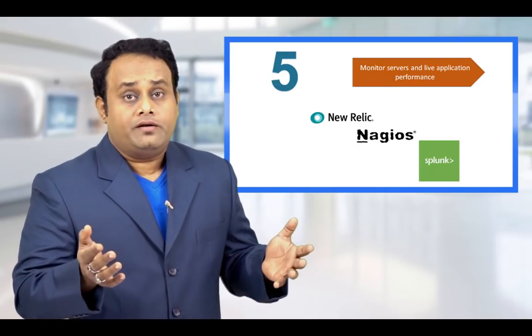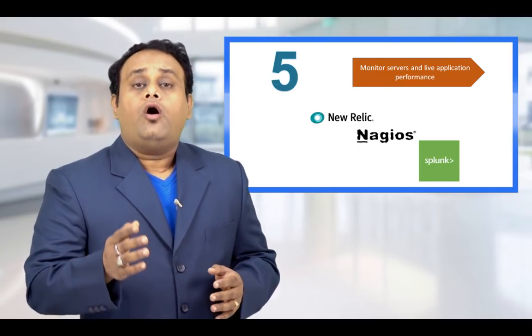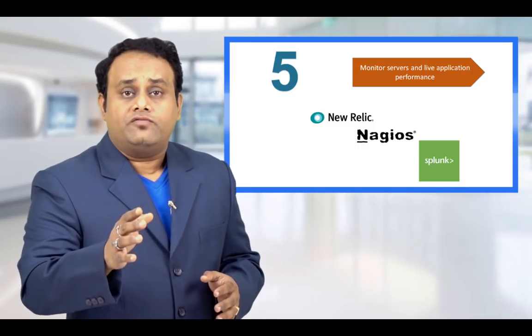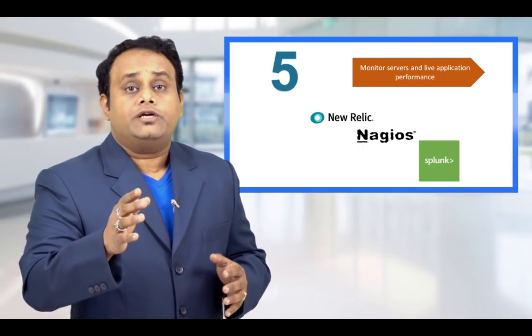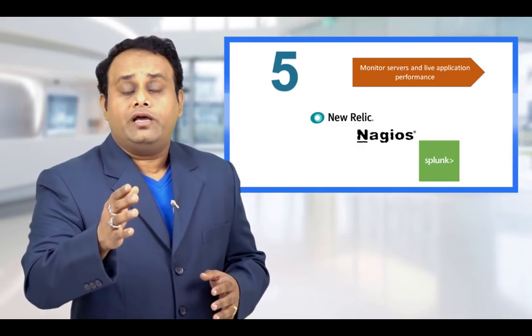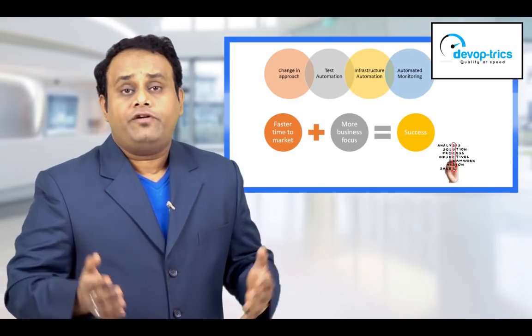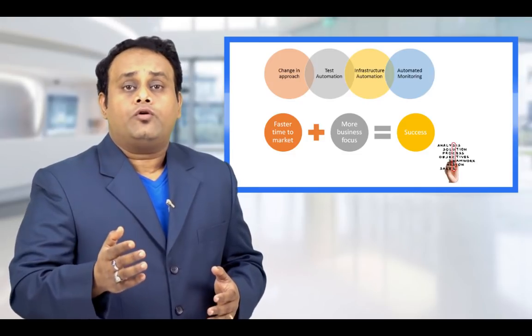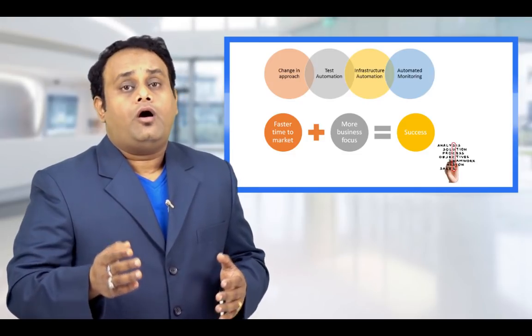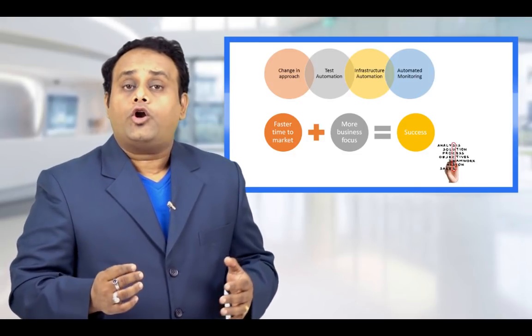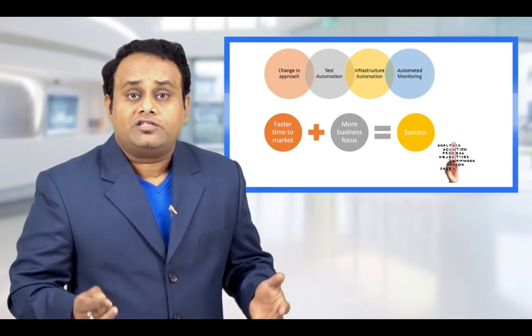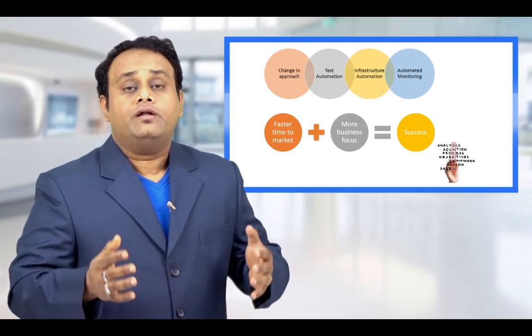Last but not least, the fifth point: since deployment and infrastructure are automated, Opera's team can focus more on monitoring the production servers using tools like Splunk, New Relic, and Nagios. All these things happen iteratively every day with automated code deployment, automated code testing, automated infrastructure management, and automated log monitoring.